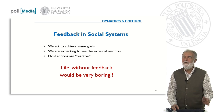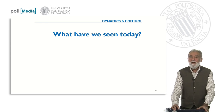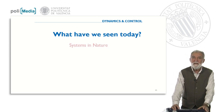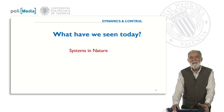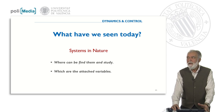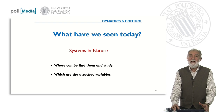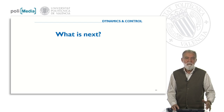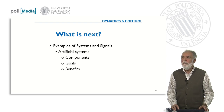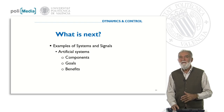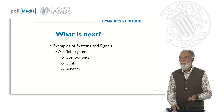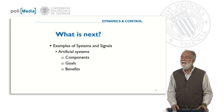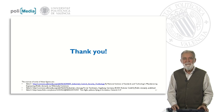So what have we seen today? We have seen many systems in nature and analyzed how to find them, study them, and identify their associated variables. In our next session, we will see another kind of example: artificial systems — what are their components, what are the goals, and what are the benefits we can get from them. Thank you very much.